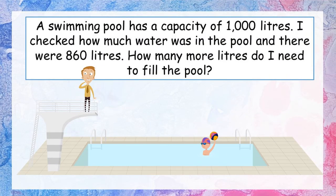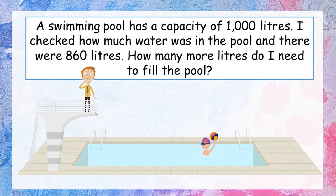This swimming pool has a capacity of 1000 litres. I checked how much water was in the pool before I jumped in and there were only 860 litres. How many more litres do I need to put in to fill the pool? Before you start, see if you can pick out the important information in this word problem. Pause the video and see if you can find just the most important pieces of information.